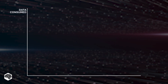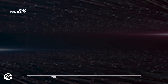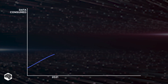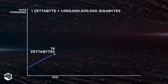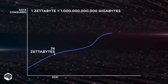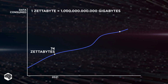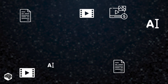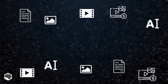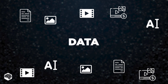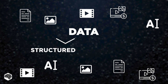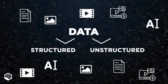The estimated amount of data consumption in 2021 was 74 zettabytes. Moreover, this number will double by the end of 2024. The information people cope with is numbers, names, or images. And in most cases, all the information is divided into structured and unstructured.